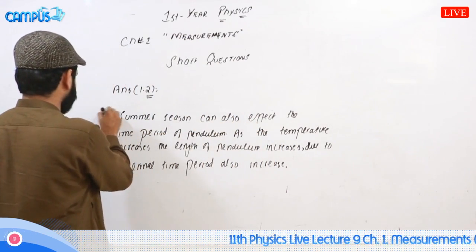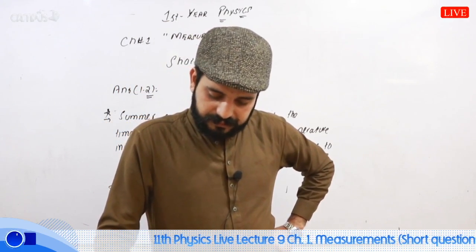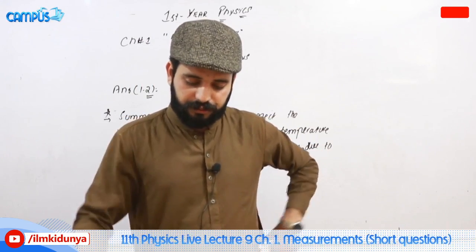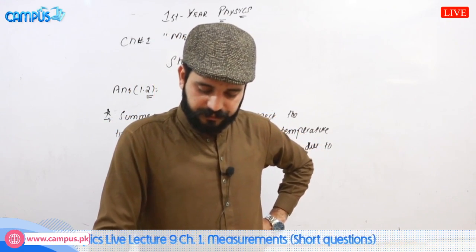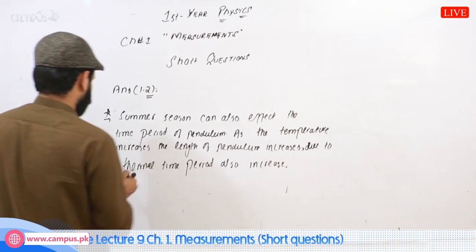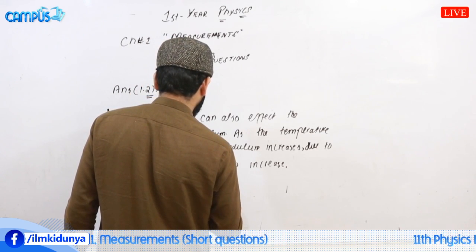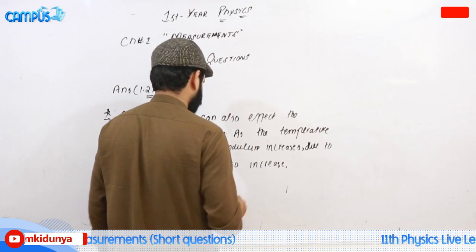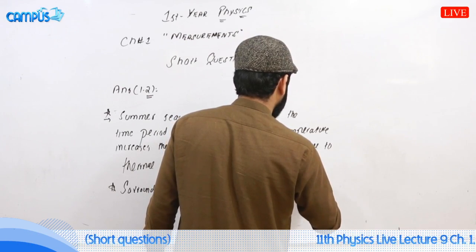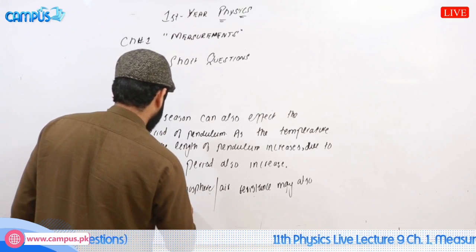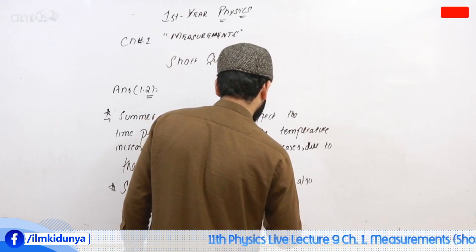Another drawback: the surrounding atmosphere and air resistance may also affect the time period of the simple pendulum. If the air resistance is too high, it will affect the motion and hence the time period of the pendulum.